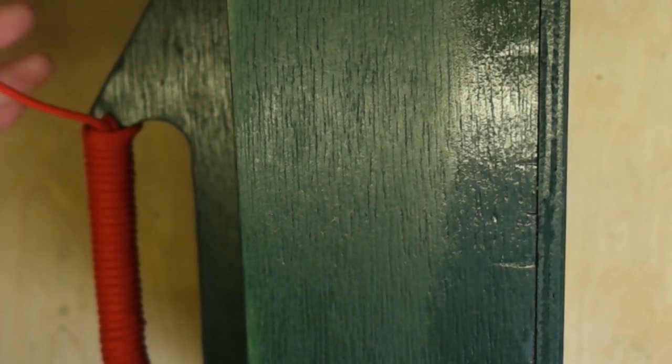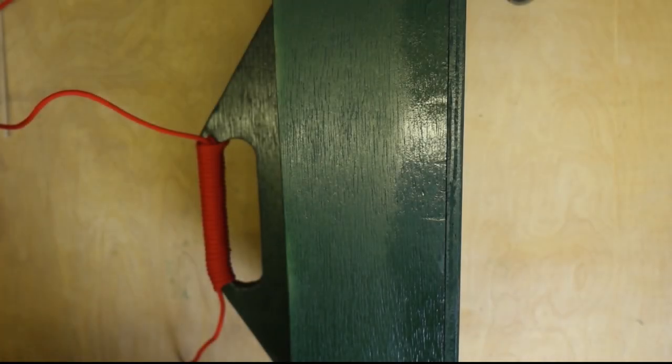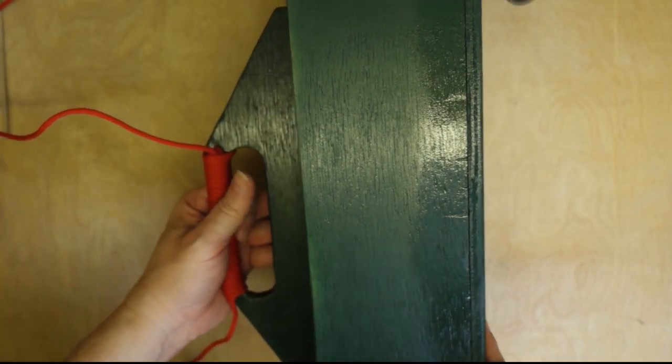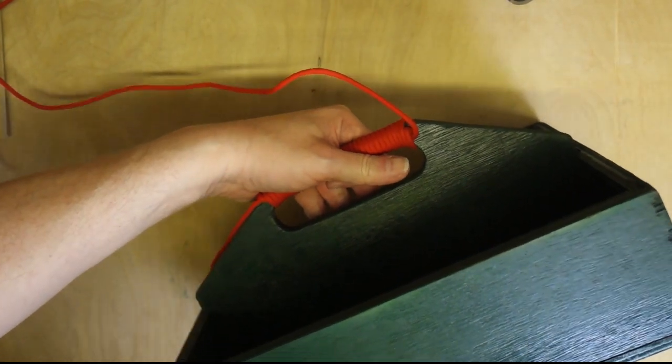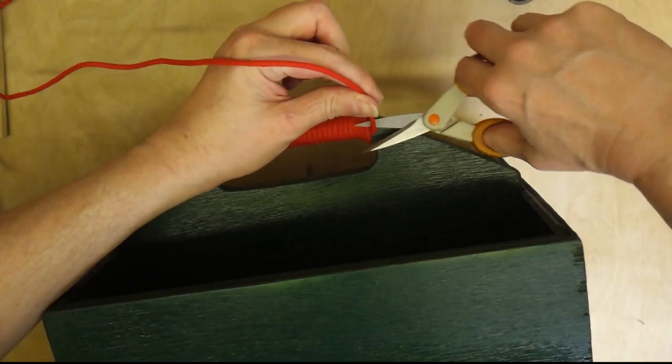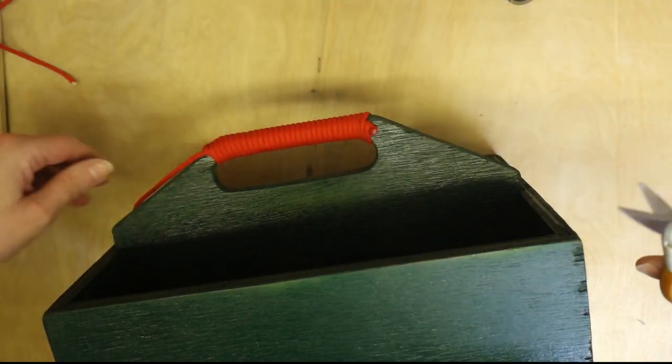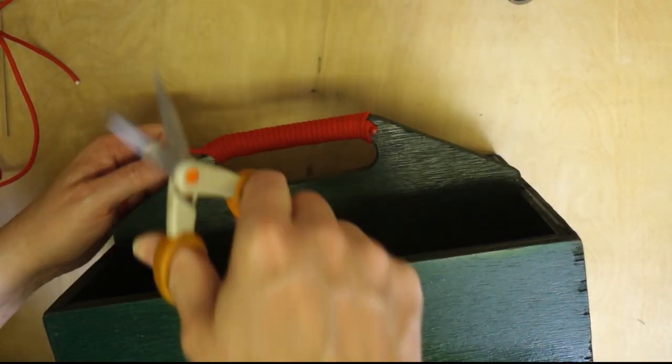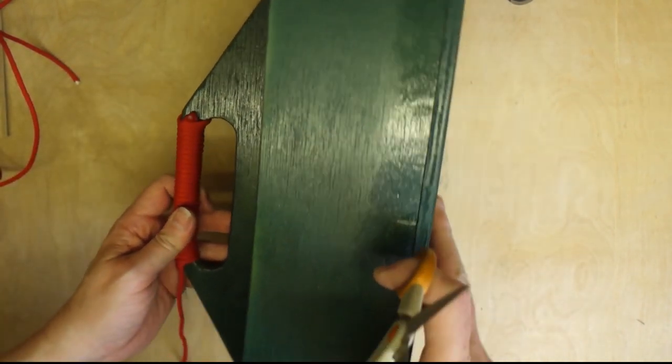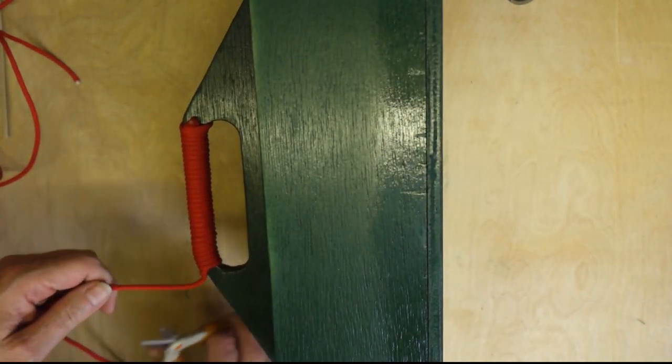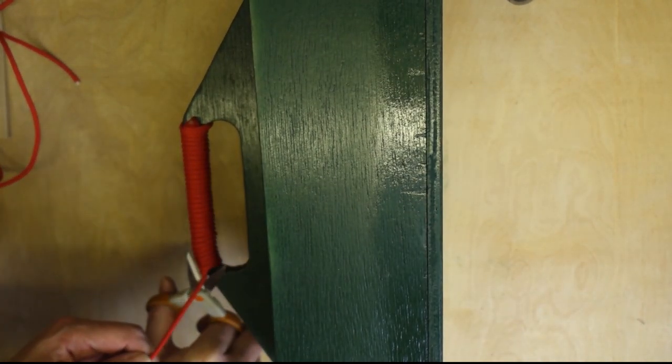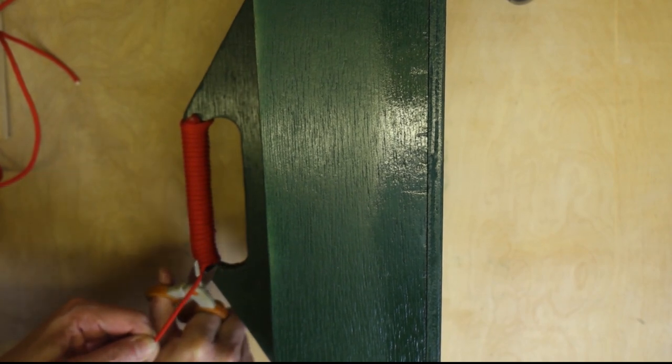Right, we need to cut these ends off and then seal them. Let's get a pair of scissors. Right, so I've got some scissors here so we'll just cut these down, like that and like that.